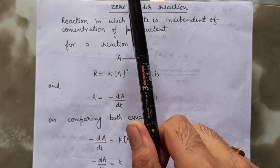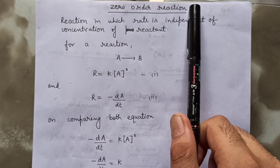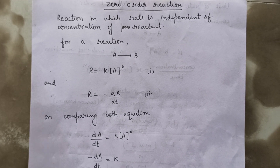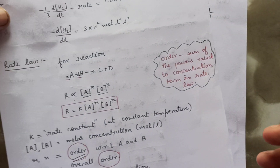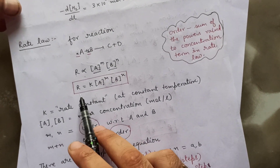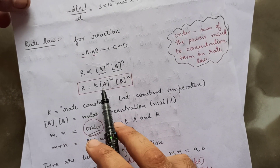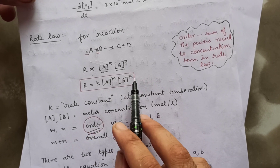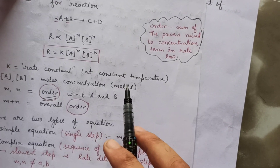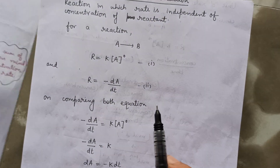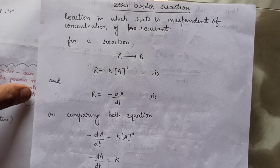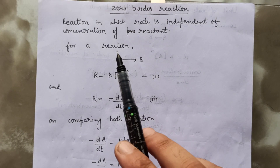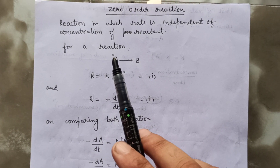The new topic is zero-order reaction. In the last class, according to rate law, we learned that r equals k times a to the power m times b to the power n, where m and n represent the order. For a zero-order reaction, the rate is independent of the concentration of the reactant.